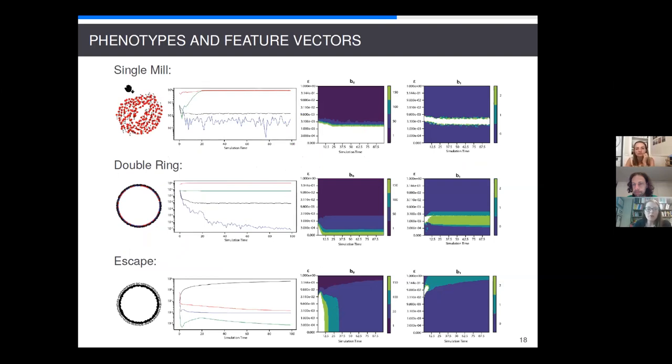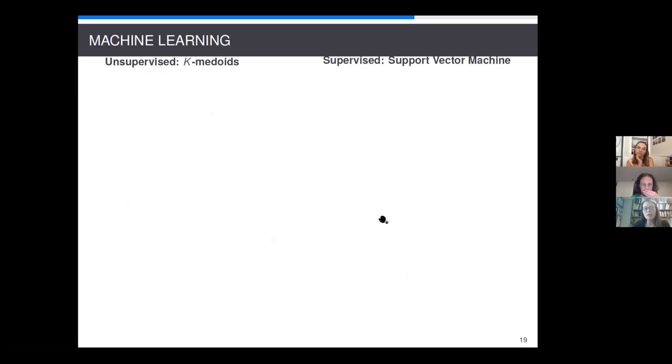So, here's just a few of the different phenotypes. Maybe we'll focus on say the double ring. And in this plot we see our order parameters and then our Betty zero and Betty one crocker plots. And so, just a couple of things to point out. We see that our polarization is essentially quite low because these particles don't align. Our angular momentum is high but not as high as our absolute angular momentum because some particles are moving counter to the majority. And then we see that our particles are fairly close. Now, we also have our dimension zero crocker plot. So, over time things get really connected together at some scale. And then also we see our two topological circles that persist both for a large amount of scale and time.